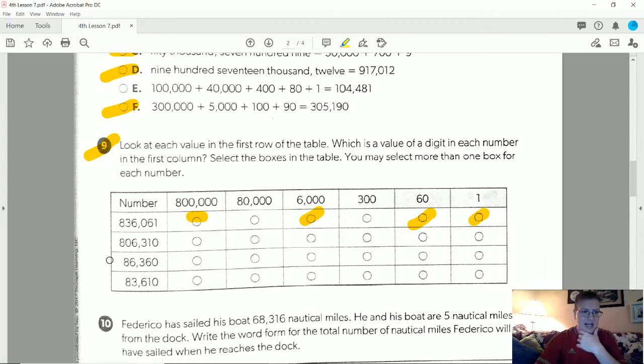Looking at the rest of those, this will be the only time I use this box. I have an 8 in the hundred thousands place, I have a 6 in the thousands place, I have a 3 in the hundreds place for 300, I do not have a 6 in the tens place, and I do not have a one in the ones place.